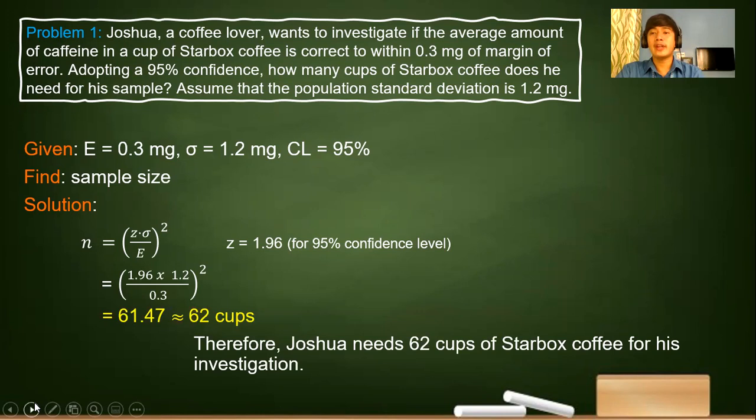Using the scientific calculator, we will get 61.47. The rule here is to round up because we don't consider a 0.47 value. So 61.47 will be rounded up to the next whole number, 62 cups.